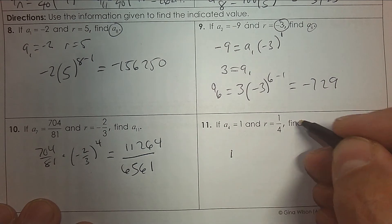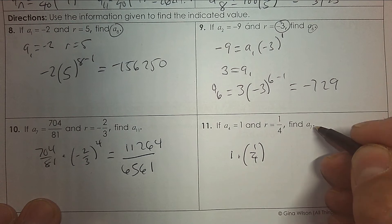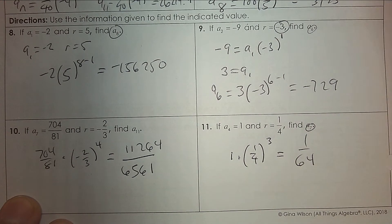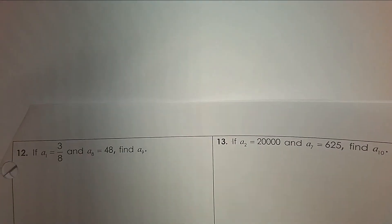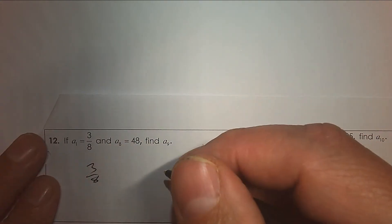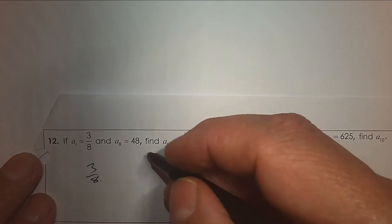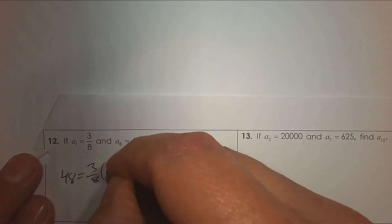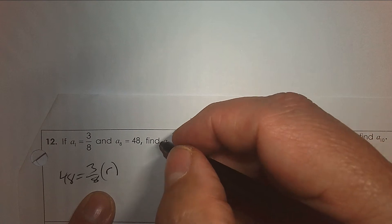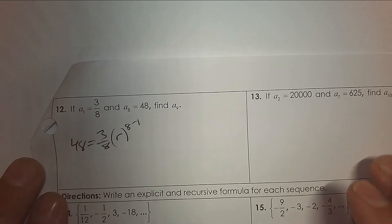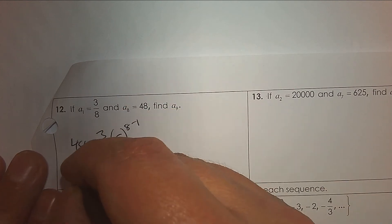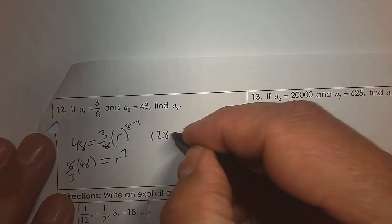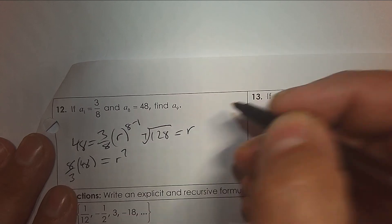Number 11: you start with the 4th term as 1, the common ratio is 1/4, and you're trying to find the 7th. So the 5th, 6th, 7th — that's to the exponent 3, giving 1 over 64. Here we have 3/8 and 48 as the 8th term. So 8 take away 1: I'll multiply by the reciprocal — 8 thirds times 48 — that's 128. The 7th root of 128 gives R, which is 2.